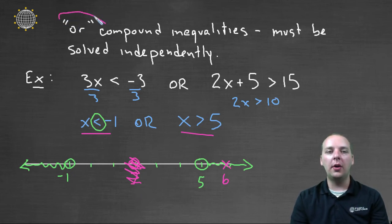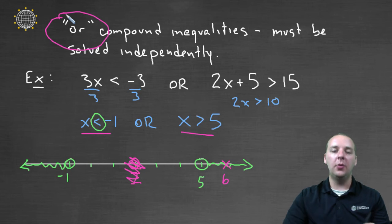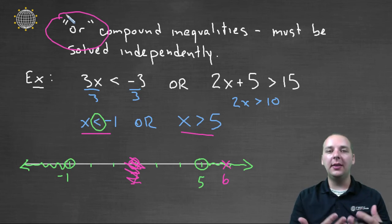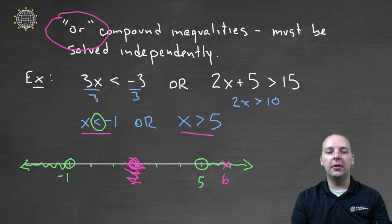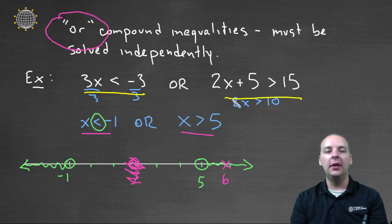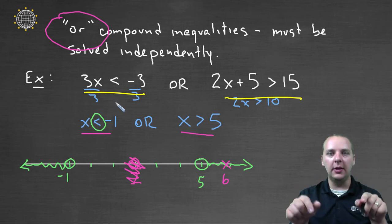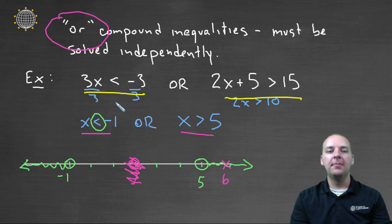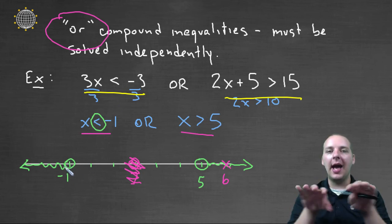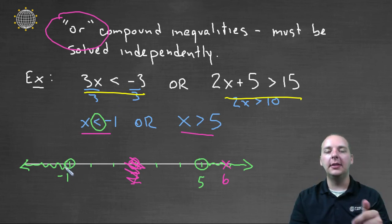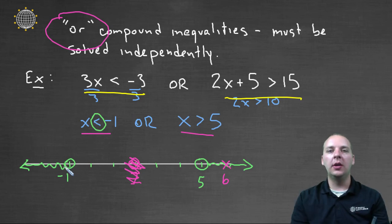This is how we handle OR compound inequalities. They're a little different than AND compound inequalities, but basically all we do is leave these written independently of each other, solve them independently of each other, and these are usually outward-facing — one going in one direction and one going in the other direction on a number line.